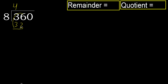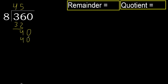Okay, subtract. Next: bring down 40. 8 multiplied by 5 is 40, which is not greater. 40 minus 40 equals 0.